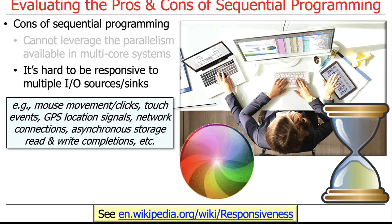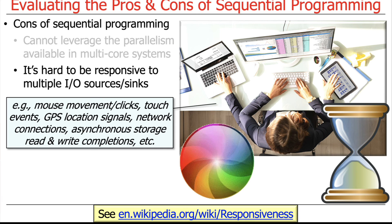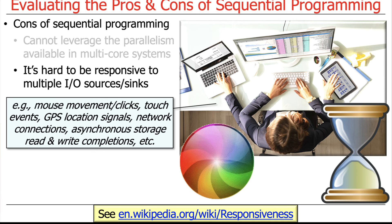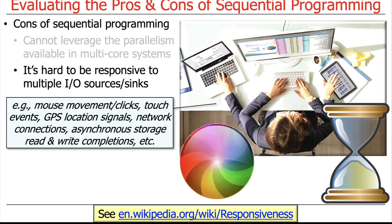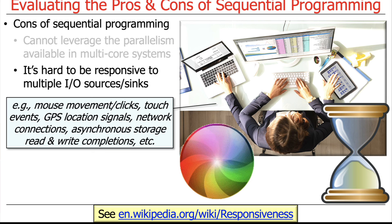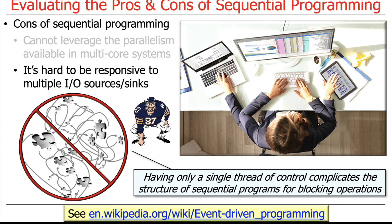Another issue is that it's hard to write sequential programs that can be responsive to multiple I/O sources and sinks — things like mouse movements, mouse clicks, touch events, GPS location signals, network connections, asynchronous storage read and write completions. If you're trying to do a lot of different things with one thread, you can end up with non-responsive software — the spinning pinwheel on Windows or the dreaded hourglass on Apple — where the UI isn't responding because it's stuck waiting for I/O. A single thread of control also complicates program structure when you need to block, especially for I/O, without using more sophisticated patterns like asynchronous or reactive programming.